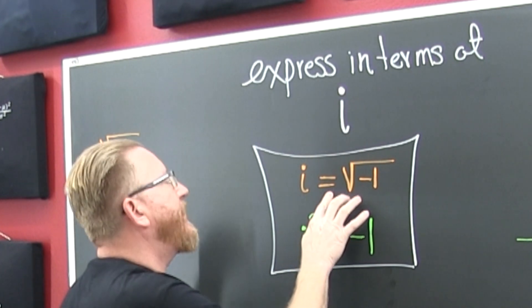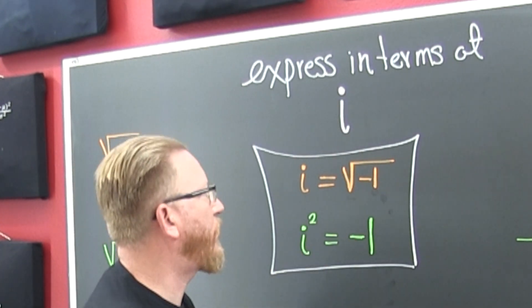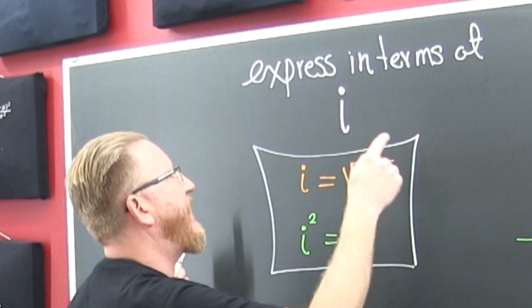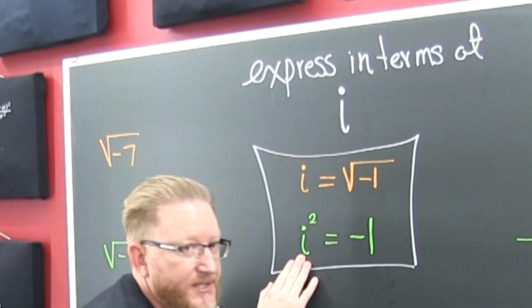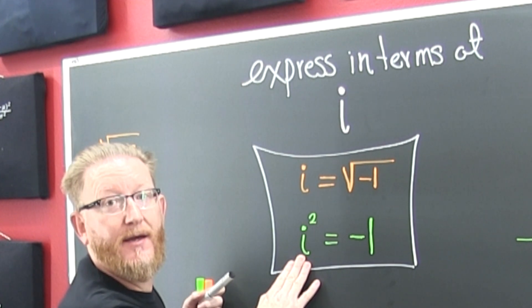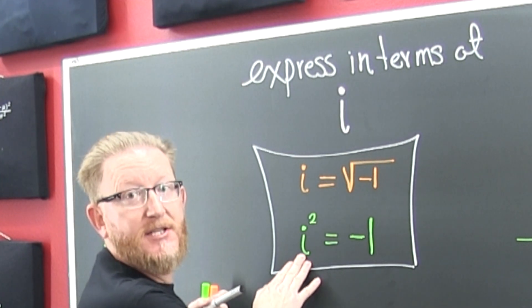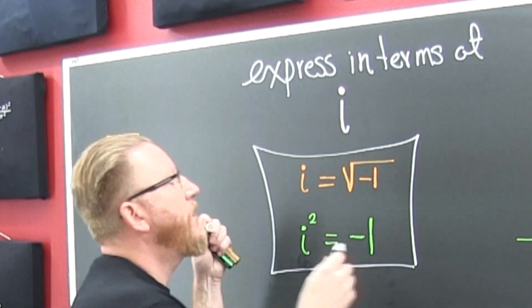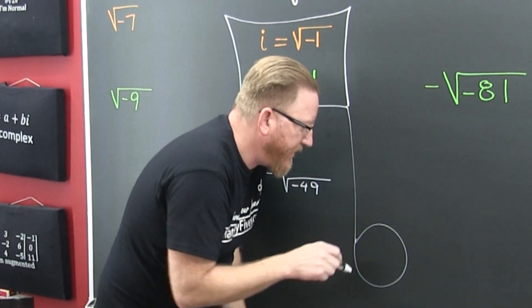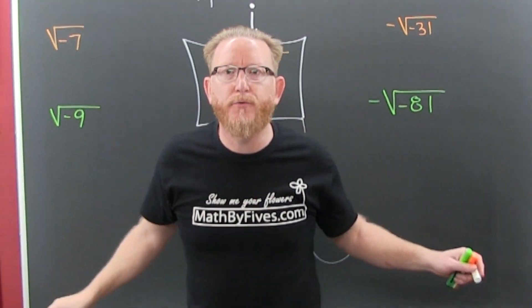Here's some things we need to know. i is defined to be the square root of minus 1. What would happen if I squared both sides? I'd eradicate the root and I'd be left with minus 1. So what we have is i squared evaluates to minus 1. You may want to make a note of these.